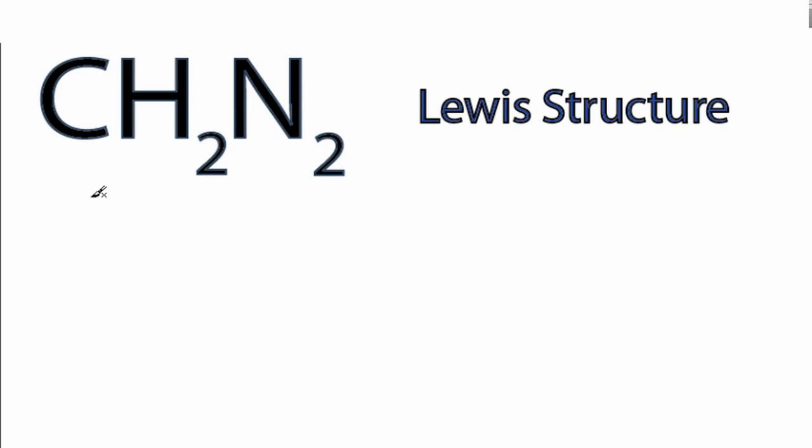For the CH2N2 Lewis structure, carbon is in group 14, sometimes called 4. It has 4 valence electrons